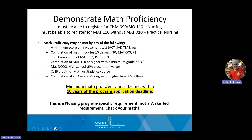Next is math proficiency, which is a little confusing. The math must be within 10 years of the program application. It can be met in many different ways: a high school GPA — for nursing, an unweighted high school GPA of 2.2 or higher; for practical nursing, a GPA of 2.8 or higher — or completing an associate's degree or higher, or a college placement test. There are multiple ways, but it must be within 10 years of the program application deadline.